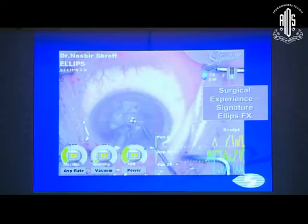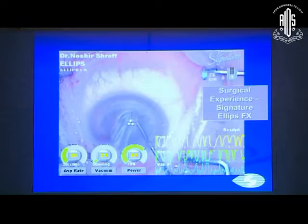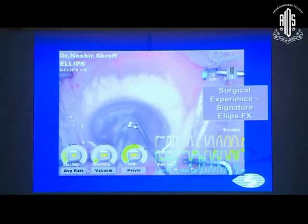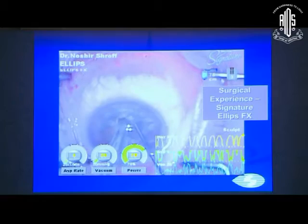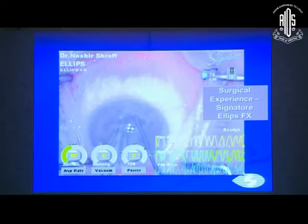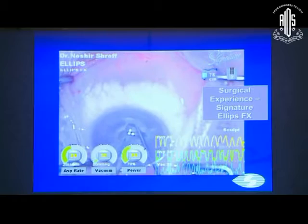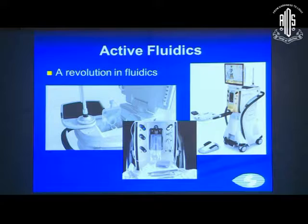A video clip demonstrates a very hard dark brown cataract being emulsified with the Signature machine, using a four-quadrant technique. Despite the cataract being dense and black, the cutting and emulsifying power is excellent. With vacuum set at 400, the chamber remains rock steady due to the occlusion mode and CASE technology present in this machine.